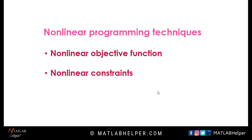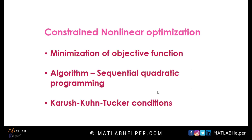Nonlinear programming techniques solve optimization problems that involve nonlinear objective functions and/or nonlinear constraints. The equality and inequality constraints cases are discussed separately since the underlying theory of the algorithm implementation would be slightly different in the two cases. In this block, we are dealing with solving the minimization problem by the Lagrange multiplier method with the KKT conditions using the sequential quadratic programming approach.